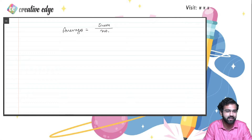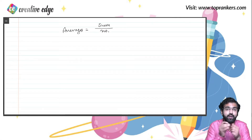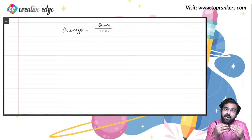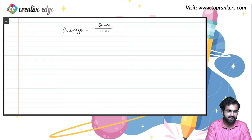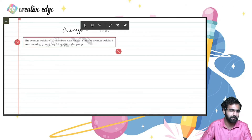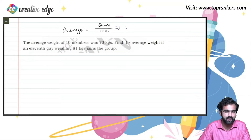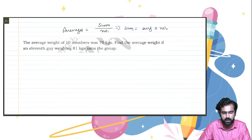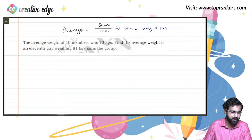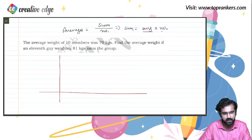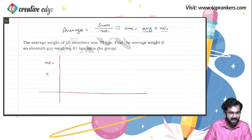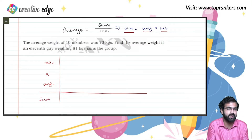Whenever you are asked to figure out the average of certain observations, you first do the sum of all the observations and then divide it by the number of observations. This average formula can also be utilized in a different manner: sum can be written as average of those observations multiplied by the number. The product of number and average gives us the sum.